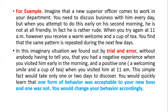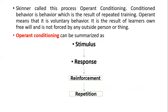That is called learning — you learned by trial and error. According to behaviorism, one form of behavior was acceptable to your new boss and one was not, so you changed your behavior accordingly. B.F. Skinner called this process operant conditioning. Conditioned behavior is a behavior which is the result of repeated trainings.